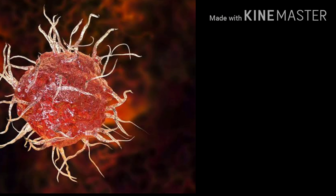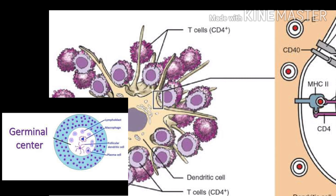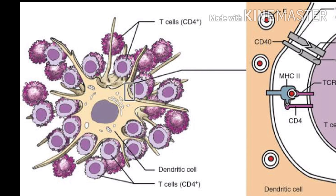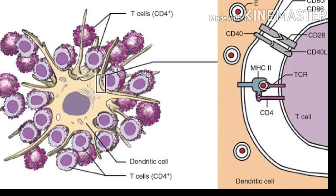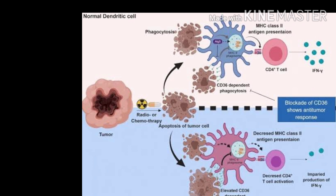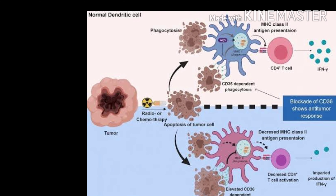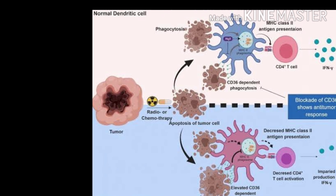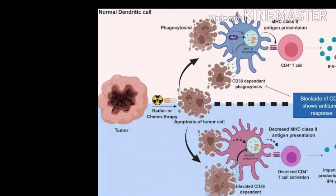Follicular dendritic cells reside within the germinal center of lymphoid follicles in the spleen and various lymph nodes. These cells have receptors for IgG and the C3b component. When bacteria coated with C3b or IgG enter the body, they can easily be trapped by these follicular dendritic cells.